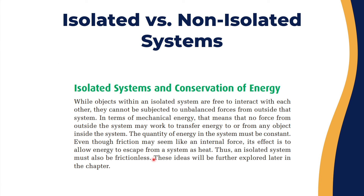The relation between isolated systems and conservation of energy is that objects within an isolated system are free to interact with each other, but they cannot be subjected to unbalanced forces from outside the system. When we talk about conservation of energy, we are talking about a closed system — like the closed room. Imagine energies as money: no energy is lost and no energy is added, so the total energy remains the same. Even if components within the system exchange energy with each other, the total energy gained versus lost will be equal. For mechanical energy, no external force may transfer energy to or from any object inside the system, so the quantity of energy must be constant.